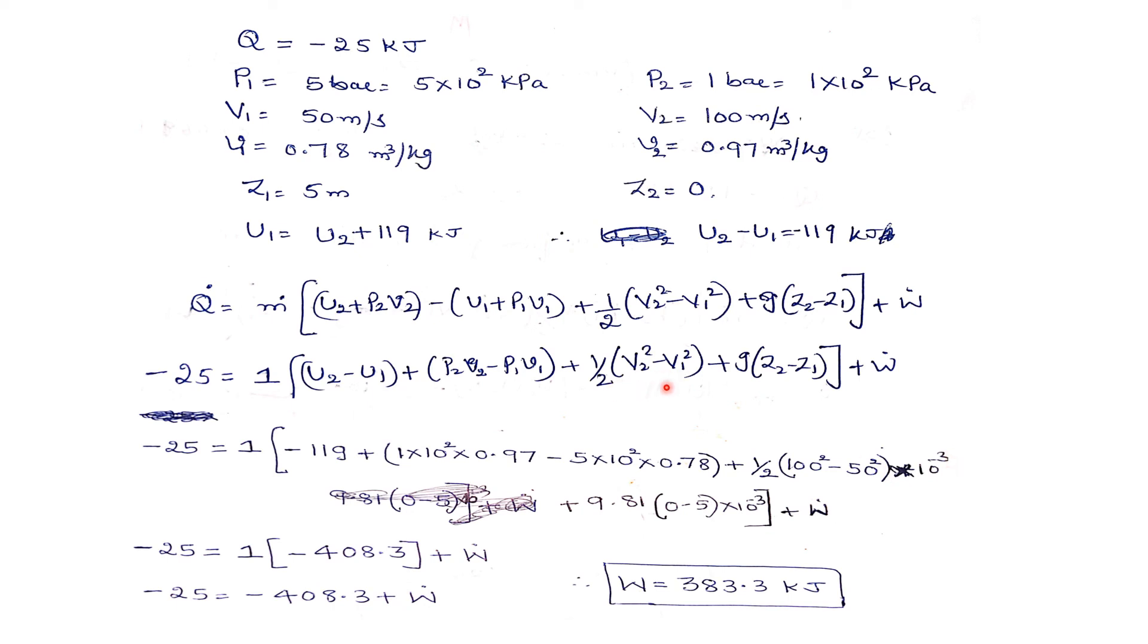Plus g is 9.81 times (Z2 is zero minus Z1) converted to 10⁻³ plus W dot. Minus 25 equals minus 408.3 plus W dot. Therefore, W dot equals 383.3 joules. This is the work done here.